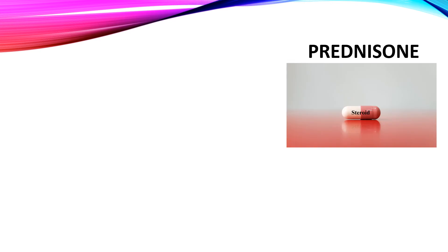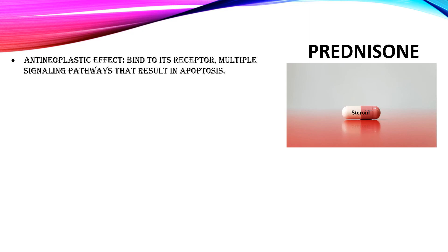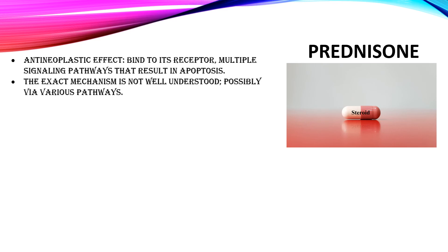The last medication in the R-CHOP regimen is prednisone. Prednisone belongs to the steroid family. Besides the anti-inflammatory effect, the steroid family has antineoplastic effects. Prednisone, after binding to its receptor, induces multiple signaling pathways that result in programmed cell death or apoptosis. However, the exact mechanism of killing hematopoietic cancer cells is not well understood and is possibly modulated via various pathways. Prednisone is used in different malignancies including acute lymphocytic leukemia, acute myelocytic leukemia, chronic lymphocytic leukemia, Hodgkin lymphoma, non-Hodgkin lymphoma, and multiple myeloma.